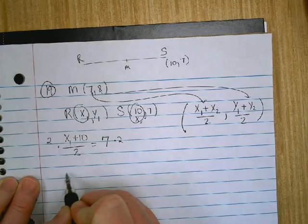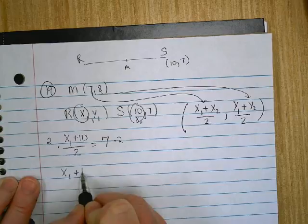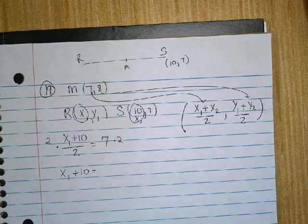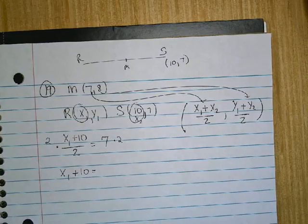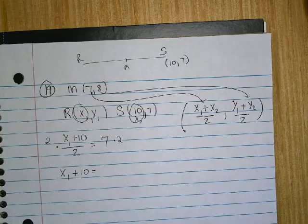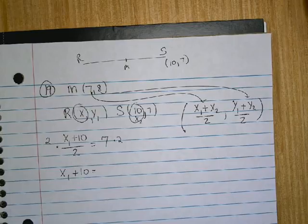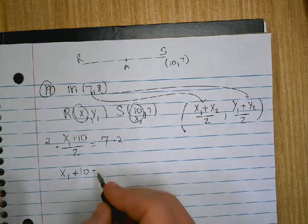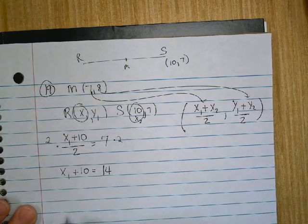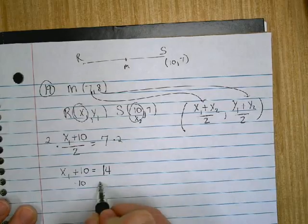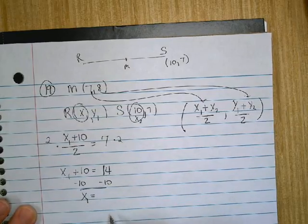If you added x sub 1 and 10 together, and then you divided by 2, your answer would be 7. So you need to solve it by multiplying both sides by 2. That tells me that x sub 1 plus 10, when you added them together, had to be 14. So what does x sub 1 have to be? 4.